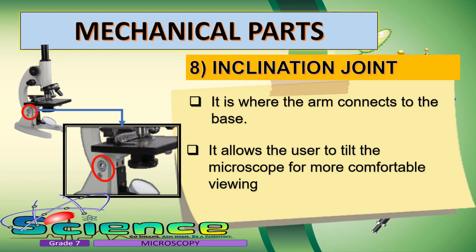However, you must only tilt the microscope when you are working with dry specimens. Tilting the microscope with liquid specimens can cause water or liquid to spill and flow into the metal parts, causing rusting which can damage the microscope.